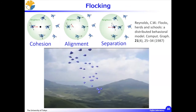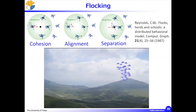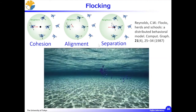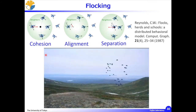In this slide, we present a flocking algorithm in three dimensions as an extension of passivity-based synchronization. As is well known, there are three fundamental rules called Reynolds' rules for achieving flocking: cohesion, alignment, and separation. Alignment can be done by attitude synchronization. By combining cohesion, alignment, and separation, we can produce flocking behavior based on the passivity property, as shown in this video.